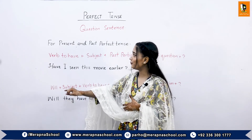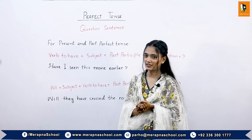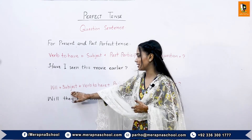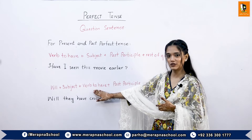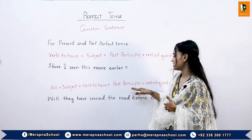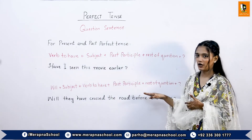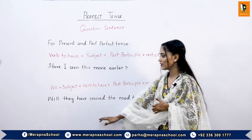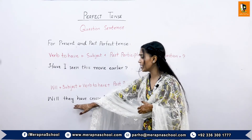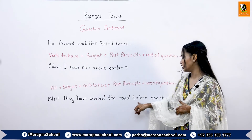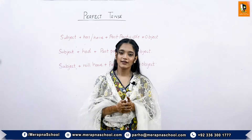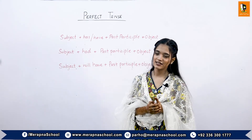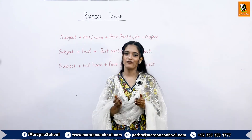For the future perfect tense, the formation is: will, plus subject, plus verb to have, then the past participle form of the verb, the rest of the question, and a question mark at the end. For example: Will they have crossed the road before the storm?